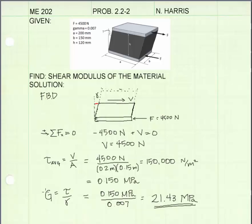G, the shear modulus, is equal to shear stress divided by shear strain. And that is equal to a shear stress of 0.15 megapascals, and the shear strain gamma is equal to 0.007 radians. If I plug these values into my equation, I get a value for shear modulus of 21.43 megapascals.